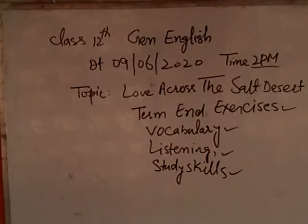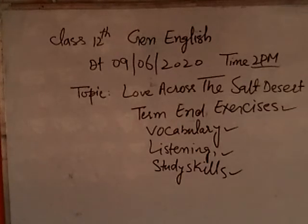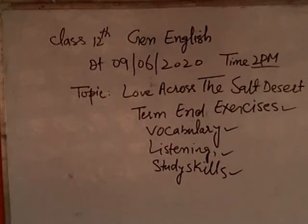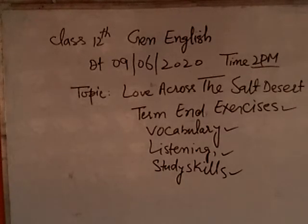Question nine: What made Aftab suspect that his wife knew about Nigel going away? There are two things. First, her facial expression. Second, the golden bracelet was missing. The facial expression of his wife and her bare arm without the gold bracelet made Aftab suspect that his wife was aware that Nigel had gone.